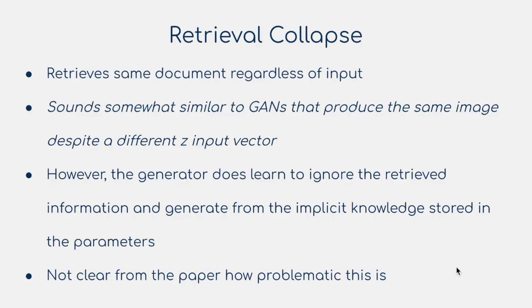At the very end of the appendix, the authors describe the problem of retrieval collapse, where regardless of what the input X is, the query encoder always retrieves the same documents from the document index D(Z). This is somewhat similar to mode collapse in GANs, where the same output is produced despite a different input. The authors cite that the generator learns to ignore the retrieved information once this starts happening and just generates from the implicit knowledge stored in its parameters — remembering that the BART model is a 400-million-parameter pre-trained model with a lot of implicit knowledge already. However, it's not entirely clear from the appendix how problematic retrieval collapse is in practice.